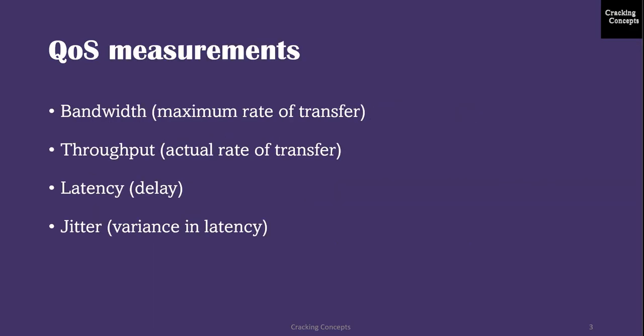Looking into some of the QoS measurements: the first one is bandwidth, which is the maximum rate of transfer, also known as the speed of the link. Throughput, which is the actual rate of transfer.